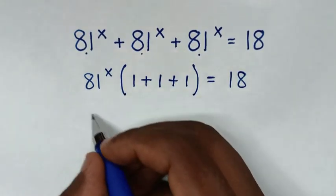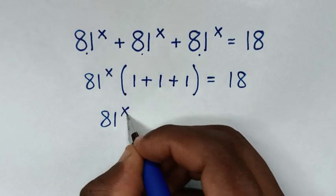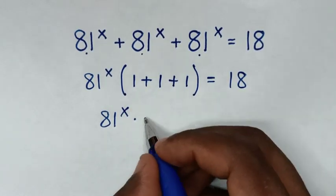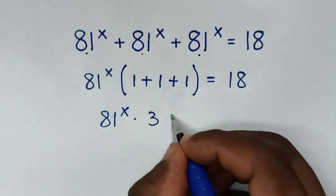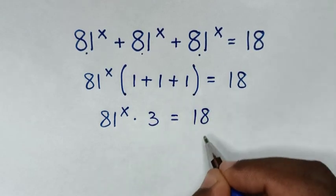Then it will be 81^x times (1 plus 1 plus 1), which is 3, is equal to 18.